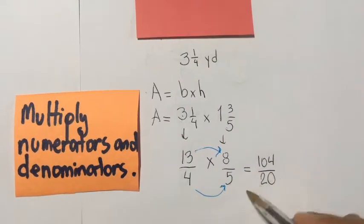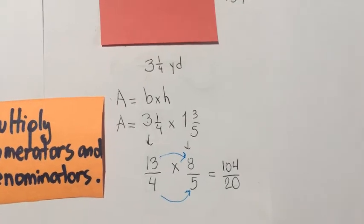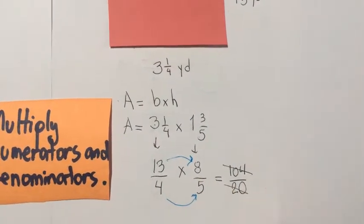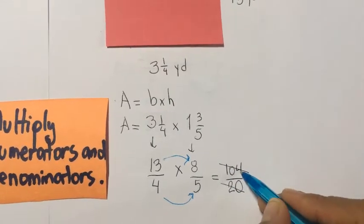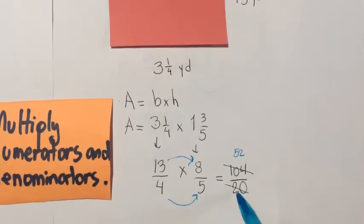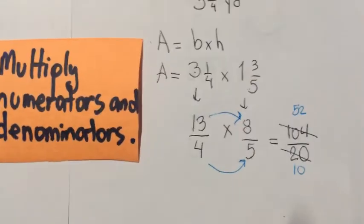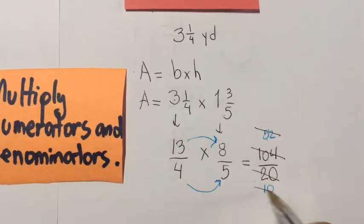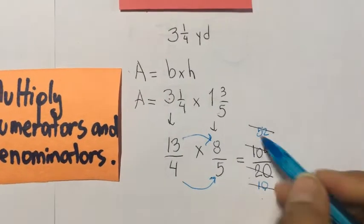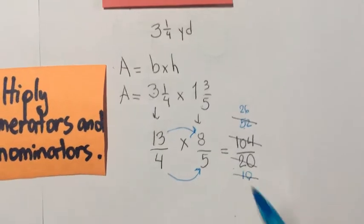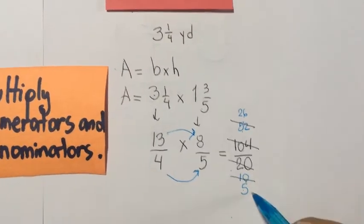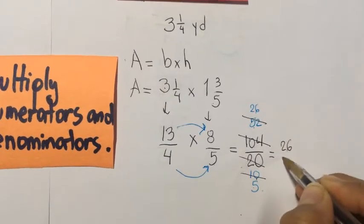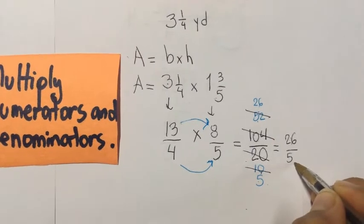Before simplifying, notice that 104 and 20 are both even numbers. 104 divided by 2 is 52, and 20 divided by 2 is 10. We continue simplifying — 52 and 10 are still even. 52 divided by 2 is 26, and 10 divided by 2 is 5. We stop here but still have an improper fraction: 26/5.